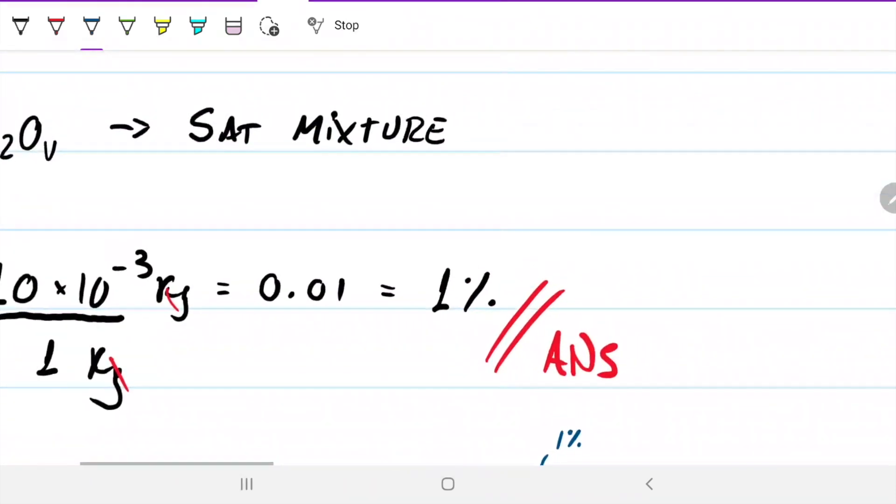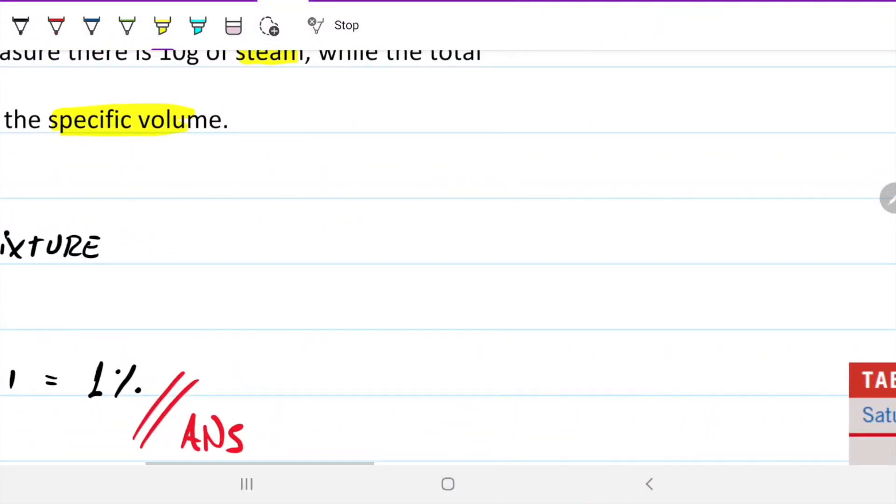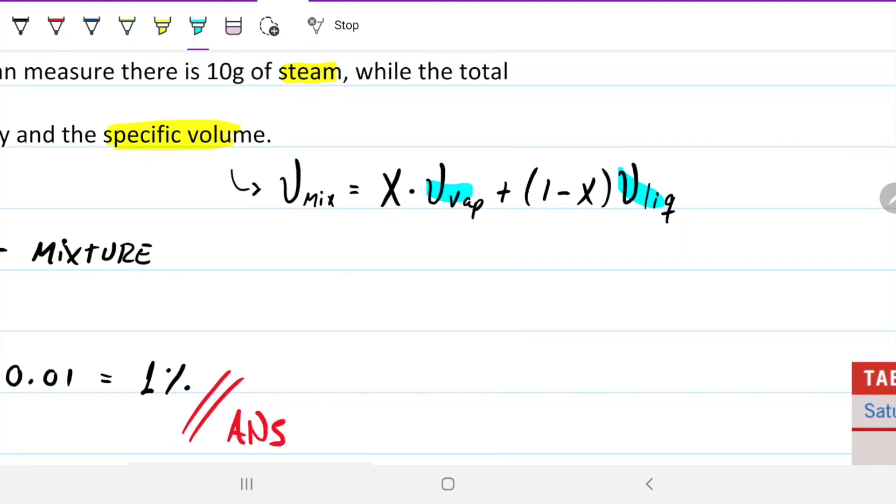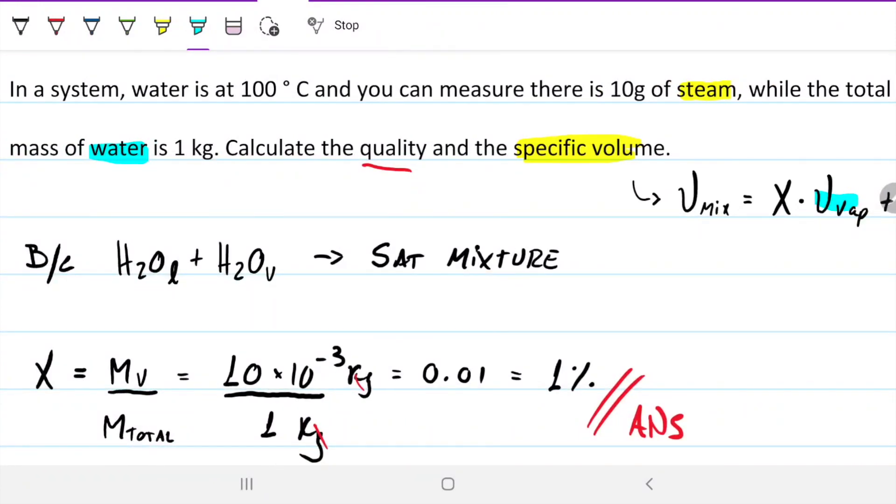If I want to know what is the specific volume, because I know it's a mixture, I know the specific volume of the mix will be how much of the vapor I have (that's the quality) times the specific volume of the vapor, plus the rest (100% minus the quality) times the specific volume of the liquid. So I have the quality already, so what I need to solve this is to find VG and VF.